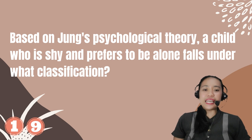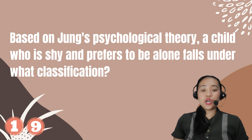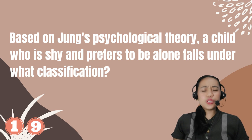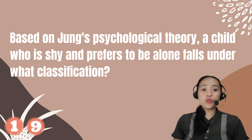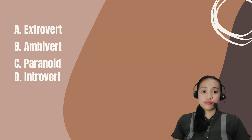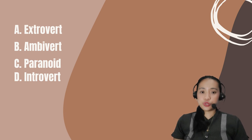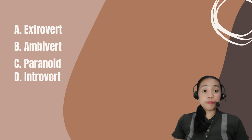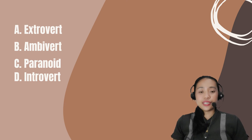Number 19. Based on Jung's psychological theory, a child who is shy and prefers to be alone falls under what classification? A. Extrovert. B. Ambivert. C. Paranoid. D. Introvert.